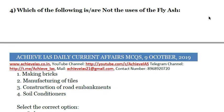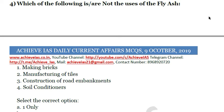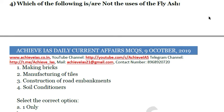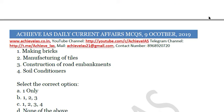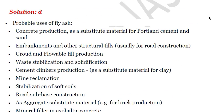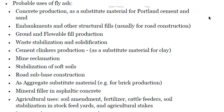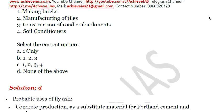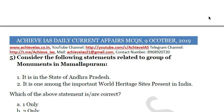Next question: which of the following is NOT a use of fly ash? First, making bricks; second, manufacturing of tiles; third, construction of road embankments; fourth, soil conditioners. Fly ash is used in all of these activities, so none of the above would be the answer. Fly ash is basically a by-product of coal washing and is generated in thermal power plants.